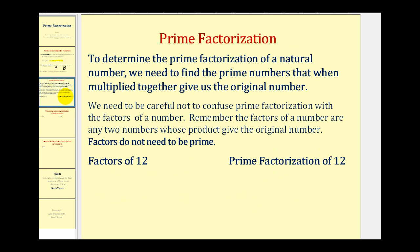To determine the prime factorization of a natural number, we need to find the prime numbers that when multiplied together give us the original number. We need to be careful not to confuse prime factorization with the factors of a number. The factors of a number are any two numbers whose product gives the original number, so factors do not need to be prime.